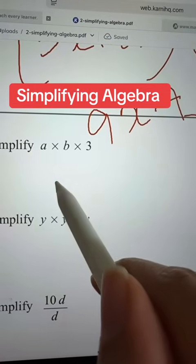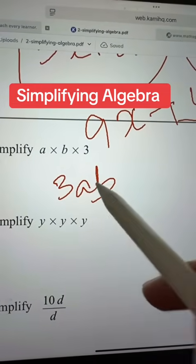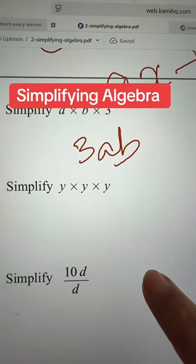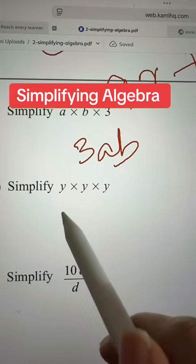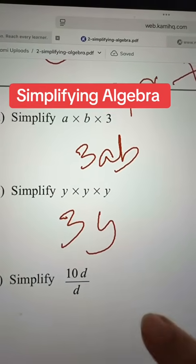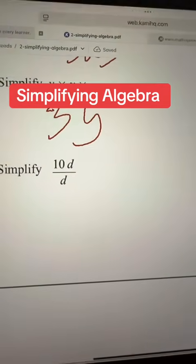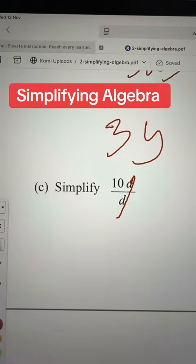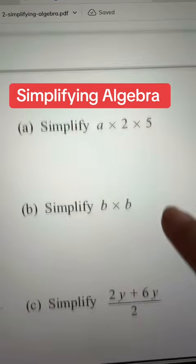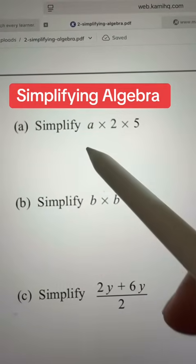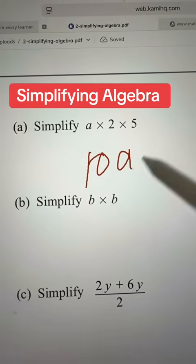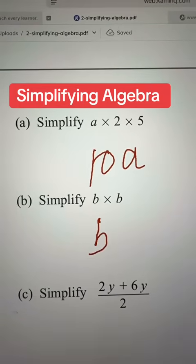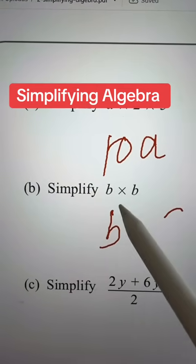Now you have multiply them up, you get this: a multiply by b multiply by 3. In this we will cancel the d's, cancel so your answer would be 10. This one your answer is 10a. In this your answer is b square.